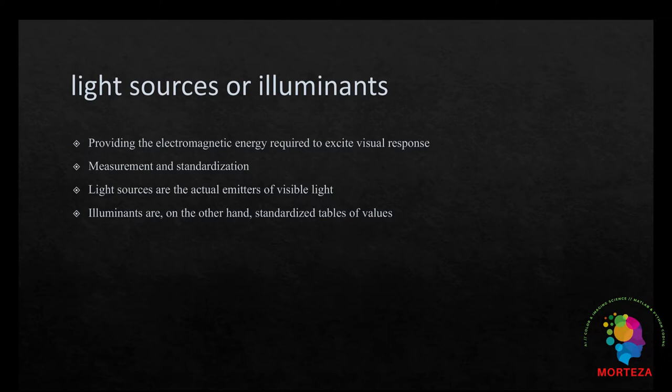Illuminants are, on the other hand, standardized tables of values that represent a spectral power distribution typical of some particular light source, such as CIE Illuminant A, which is representative of the tungsten light source, and D65, which is representative of the average daylight, and F11, which is fluorescent TL84.